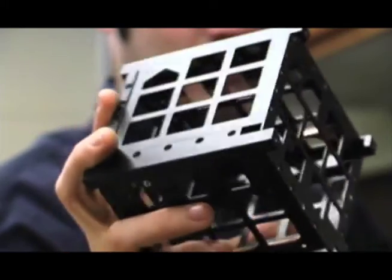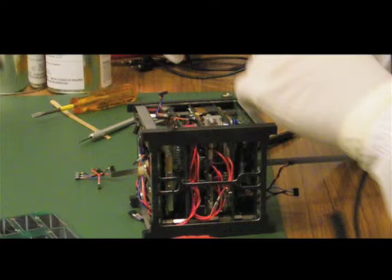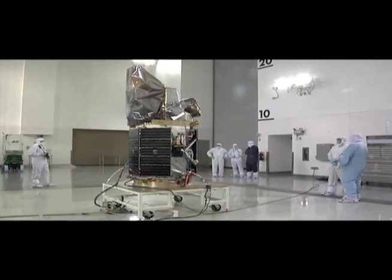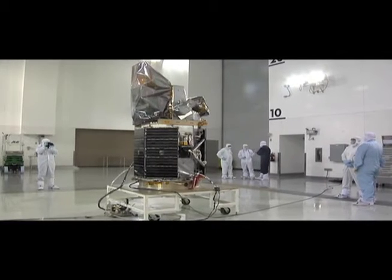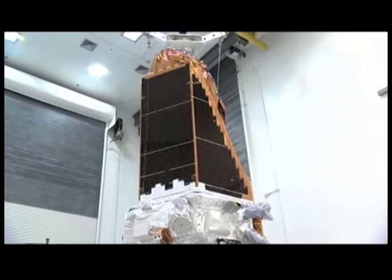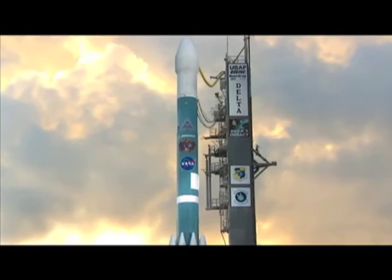A basic CubeSat that a student team would build looks like a 4-inch cube and weighs about 2 pounds. The CubeSats are placed as secondary payloads on current NASA missions. In other words, the CubeSats piggyback or hitch a ride alongside the primary spacecraft.